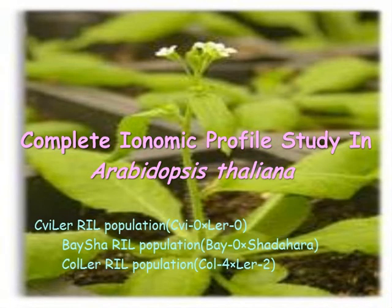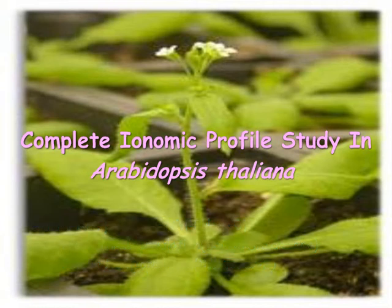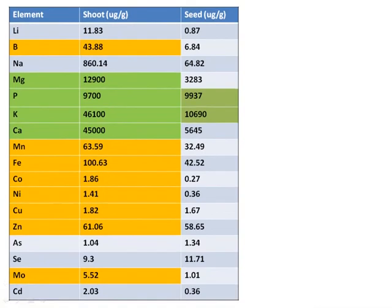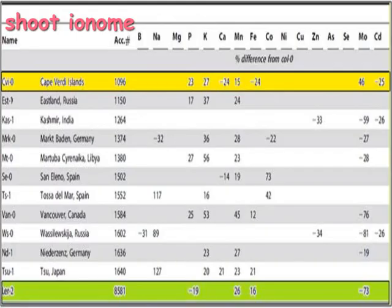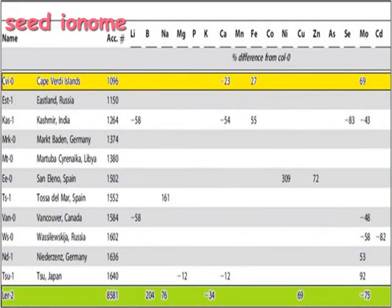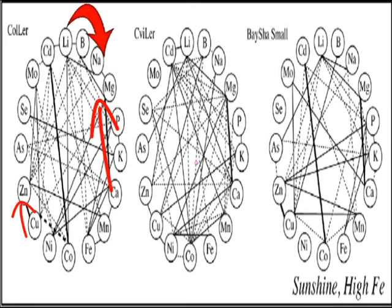We did ionomic profile study in Arabidopsis thaliana. Different accessions were collected and three populations were studied. Ionomes in shoot and seeds were studied. Green represents the macronutrient in the shoot and other colors represent the micronutrients in the seeds. Variation in the shoot ionomes and seed ionomes in different accessions was observed. Then correlation analysis was done for the elements from these three populations: population grown in sunshine high iron and sunshine with low iron. Three pairs of elemental correlation were observed in the populations grown.